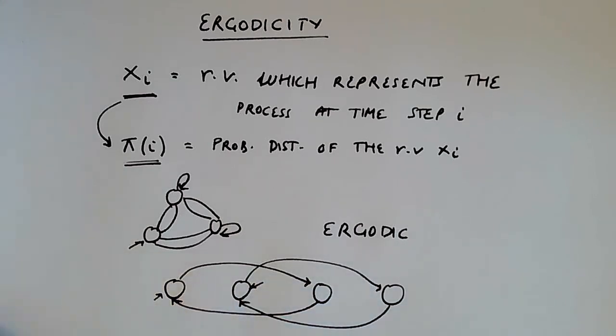If you started in this state, you'd have a different distribution. So even by running the stochastic process for very long periods of time, the memory of the initial state is not going to be lost.